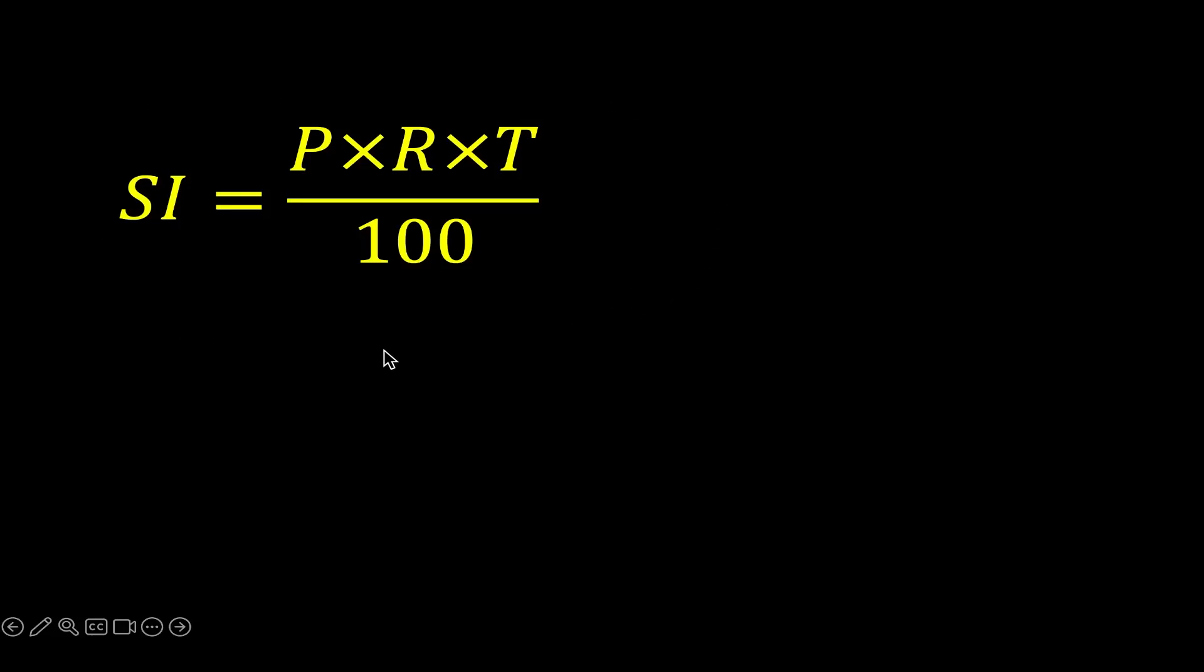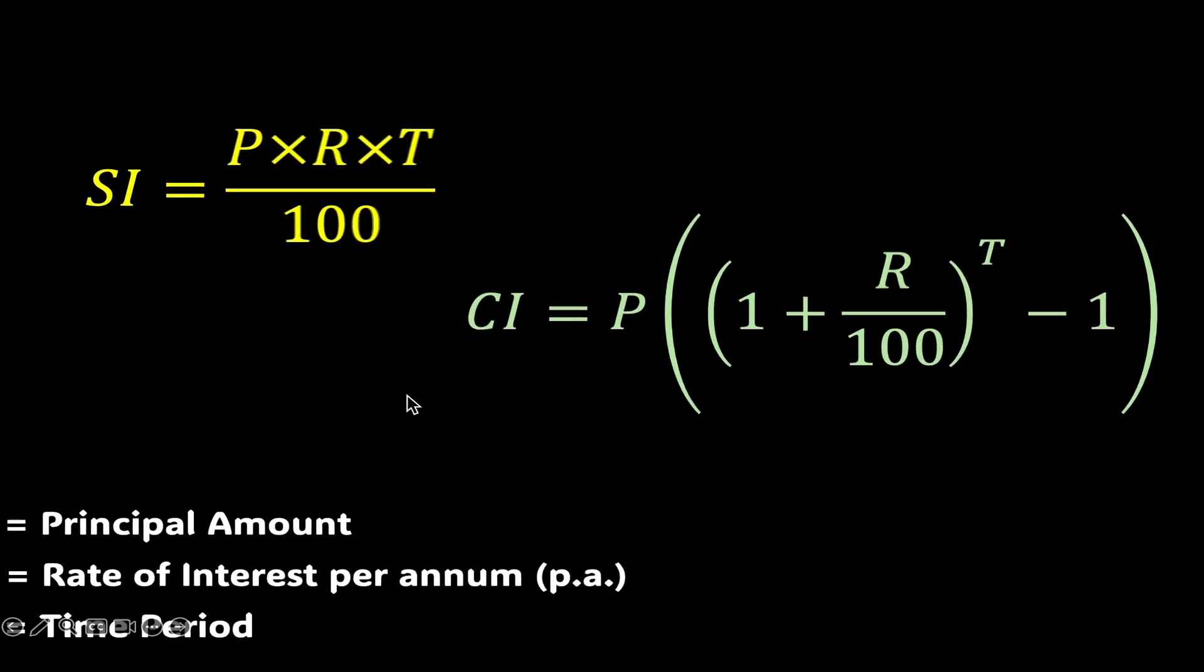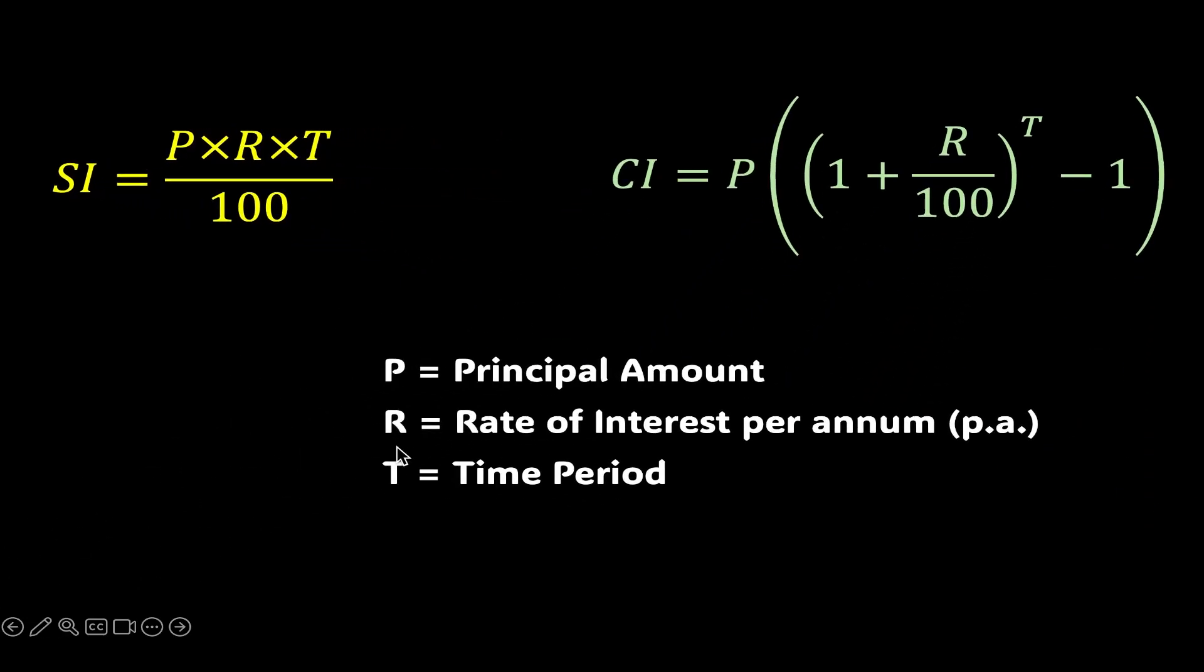This is the formula to find simple interest and this is the formula to find compound interest. Where P stands for principal amount, R stands for rate of interest per annum.